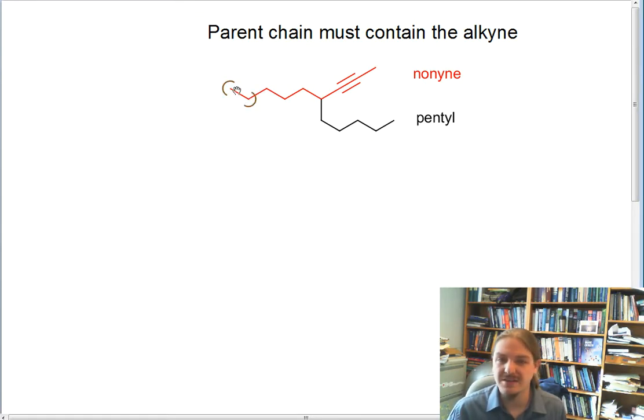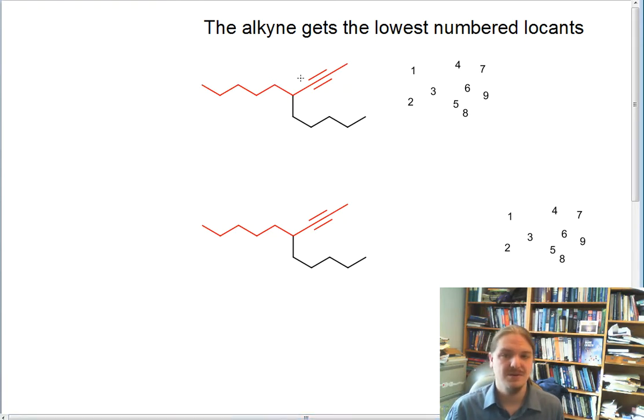So now here we have a nine carbon parent chain that is a nonyne containing the alkyne and a substituent, a pentyl attached to it. Now we need to assign locants to the parent chains to help us figure out one, where the alkyne is, and two, when we assemble the name, where this pentyl group is. Now, as always, there's more than one way the locants can be assigned to the parent chain, which is why I've got the structure drawn twice on this screen.